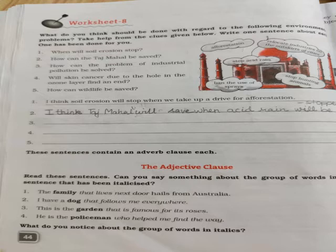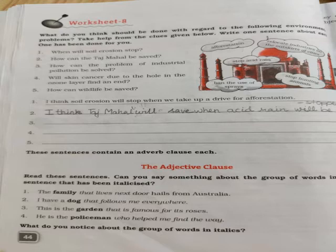Now, the adjective clause. What is an adjective clause? It is a group of words in a sentence that tells us more about the subject — a clause which contains a subject and predicate of its own and does the work of an adjective, describing the quality of a noun or subject. For example: 'The family that lives next door hails from Australia.' Here, 'that lives next door' tells us more about the family. Another example: 'I have a dog that follows me everywhere' — 'that follows me everywhere' describes the dog.